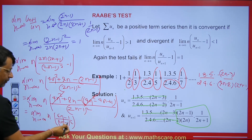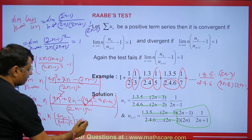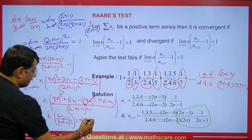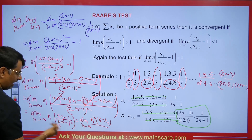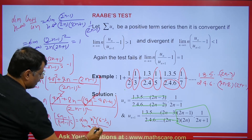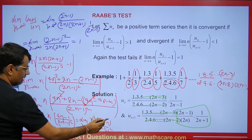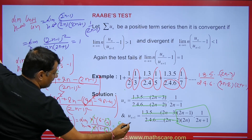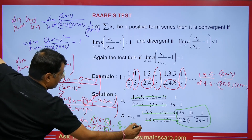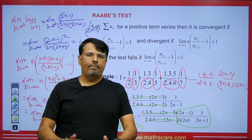After taking n common from numerator and denominator, n² cancels with n², and as n tends to infinity the 1/n terms go to 0. The value we get is 6/4, which simplifies to 3/2, which is greater than 1. This indicates that the series is convergent by Raabe's Test.